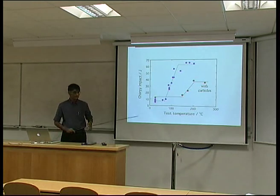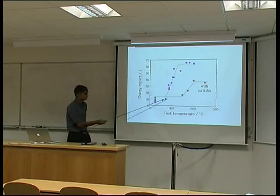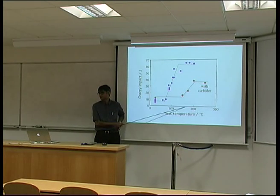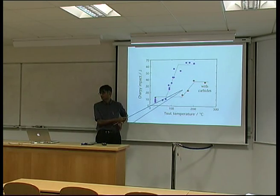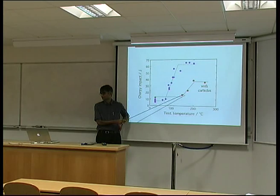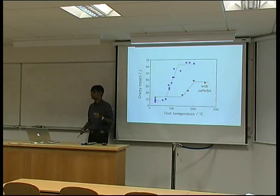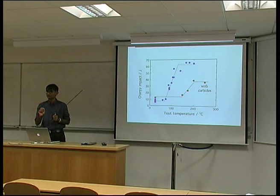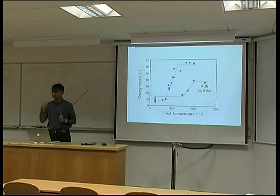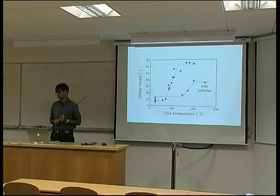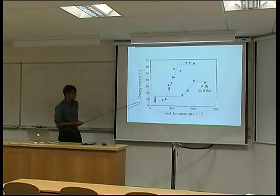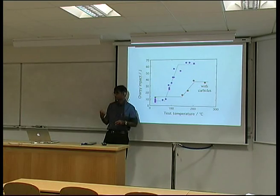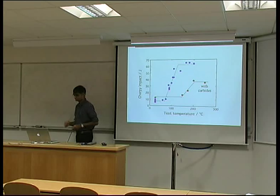The carbide particles are of the order of a fraction of a micrometre in size, and for a high-strength steel, that's like a hard inclusion in the material. When you measure the toughness, it is bad — the impact transition temperature is well above the minimum temperature. This is the reason why high-strength bainite steels haven't been successful.